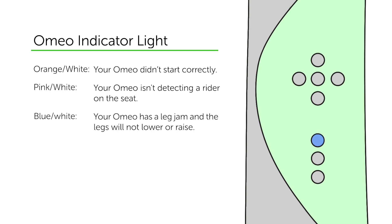When the light flashes between blue and white, this means your Omeo has a leg jam. During this time, your Omeo's legs will not lower. This can be remedied by clearing the jam, shifting your weight in the seat and trying again.